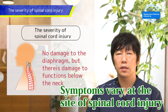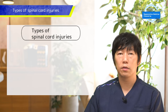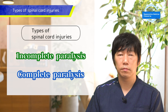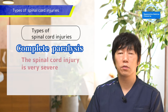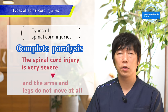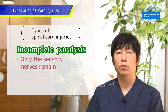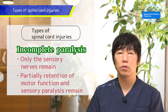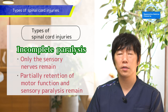This shows that various symptoms can occur depending on the location of the spinal cord injury. Spinal cord injuries come in two types: incomplete paralysis and complete paralysis. Complete paralysis means the spinal cord injury is severe and the limbs don't move at all. Incomplete paralysis refers to cases where only sensory nerves remain, or when only a part of motor function or sensation is retained, resulting in various symptoms.